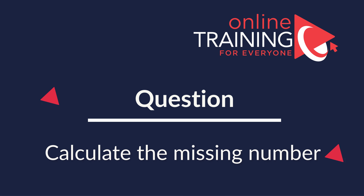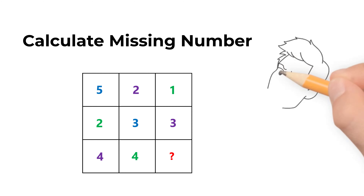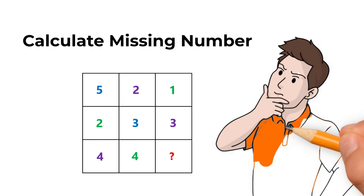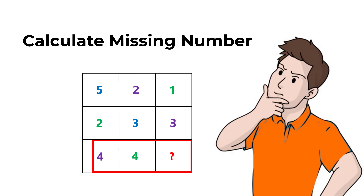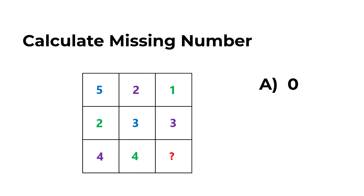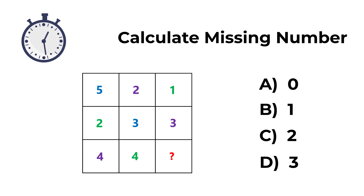Calculating missing numbers is one of my favorite types of questions. You are presented with a 3x3 matrix — a square with smaller squares inside containing numbers in different colors. The numbers are 5, 2, 1, 2, 3, 3, 4, and 4, with one number missing. You need to select from choices A — 0, B — 1, C — 2, and D — 3. Take 5 to 15 seconds to see if you can identify the missing number.